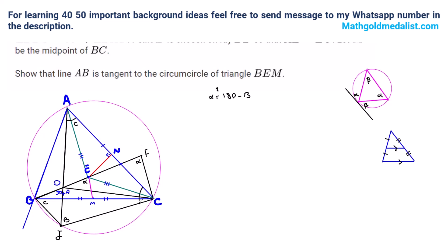Now let's look at further angle chasing we can use. This angle is alpha and we want to prove it is 180 minus B. Since the angle at J in the quadrilateral is B, we should prove JDFC is cyclic — this is equivalent to our goal. When working on a hard problem, try working both from the assumptions and from the conclusion. So it is equivalent that JDFC is cyclic.